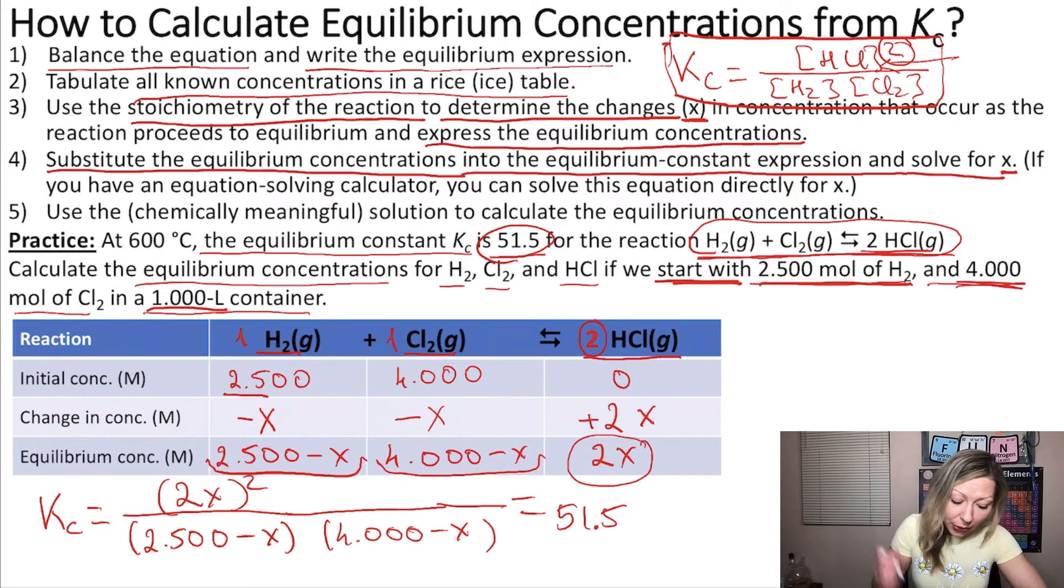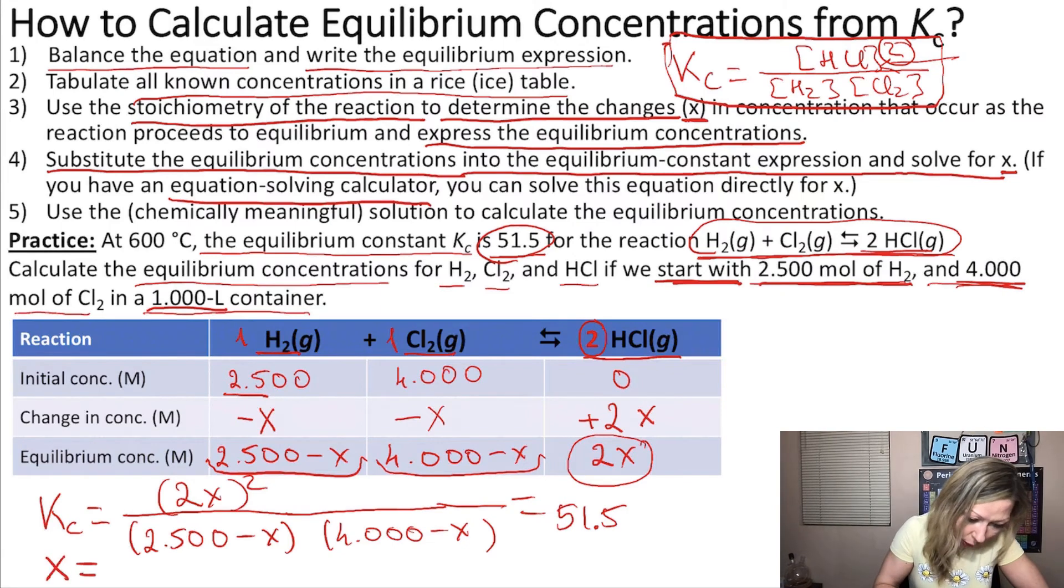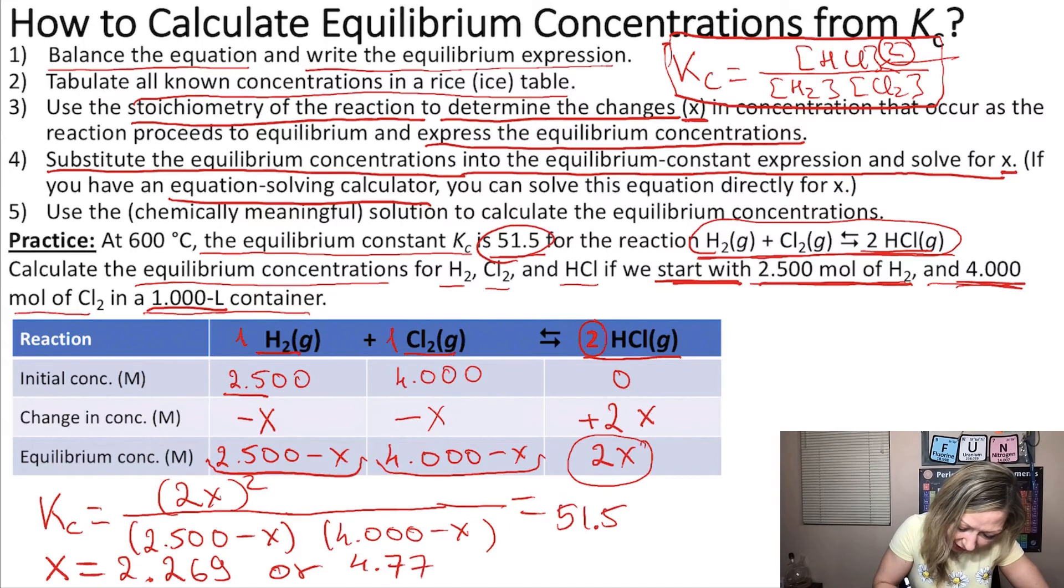Now, if you have an equation solving calculator, you can solve this equation directly for X. And if you do that, you are going to come up with two roots. And out of those two roots or two solutions, only one will be chemically meaningful. So if you solve this expression right here, your X is going to be 2.269 or 4.778.